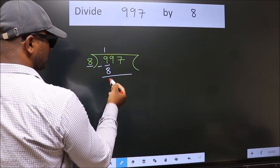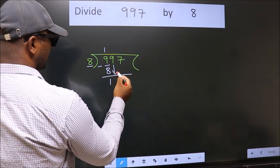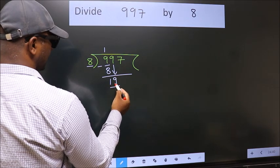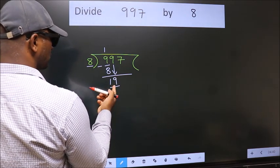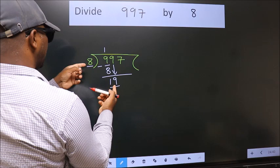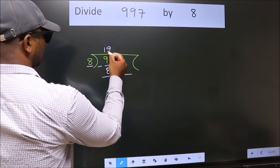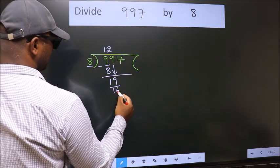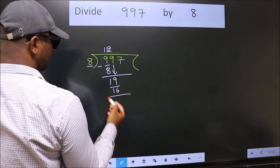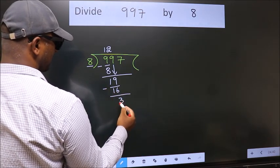After this, bring down the next number. So 9 down, giving us 19. A number close to 19 in the 8 table is 8 twos, which is 16. Now we subtract and get 3.